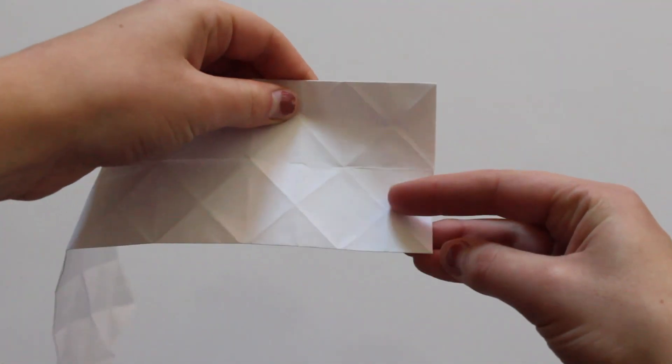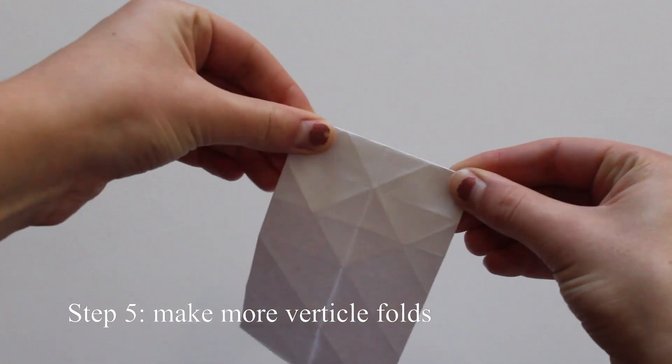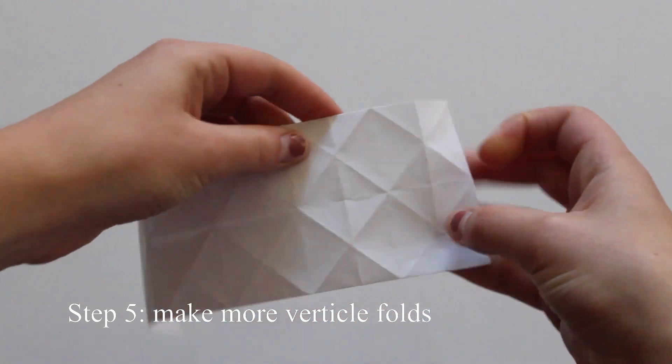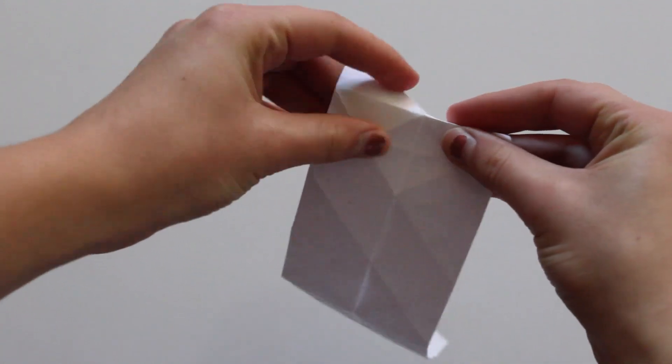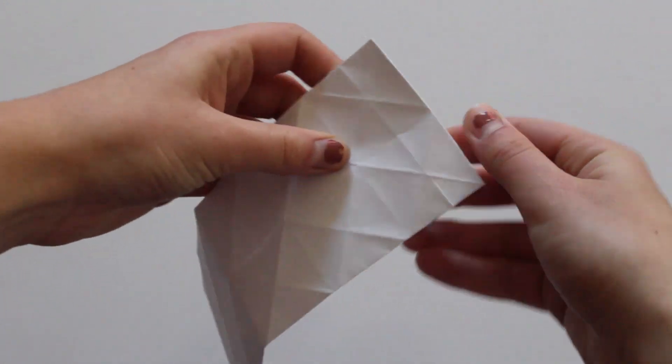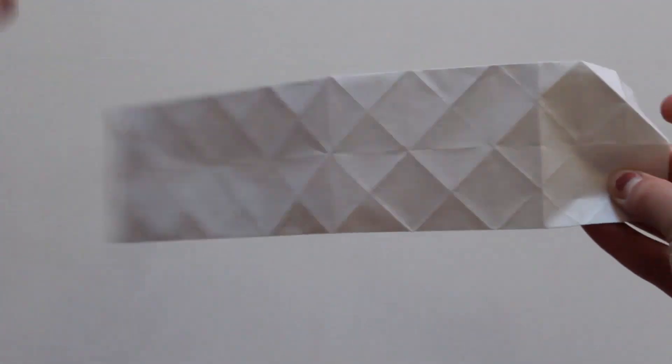And we're just going to make vertical folds that intersect the cross of the diagonals. So you should have half of them already because that was when you divided the strip into eights, but we'll just fill in the rest of it now, again making sure to line things up nice and clear.